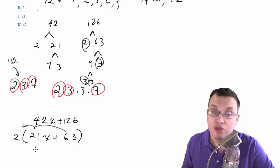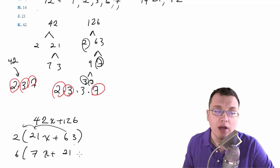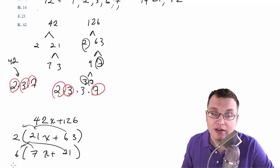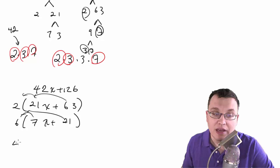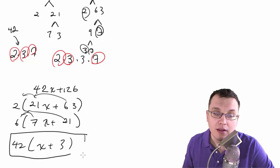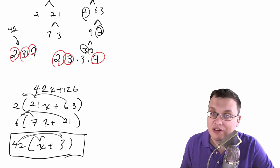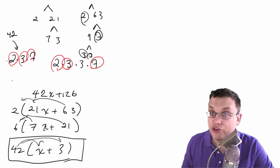So this would be 21x plus 63. We'll pull out another 3, so it's 6 times 7x plus 21. And then again, we'll pull out a 7. So we pull out that 7. We get 42 times x plus 3. So that would be your simplified factor, and you could just multiply this through if you wanted to double-check. Long story short, you'll get 42 that way.